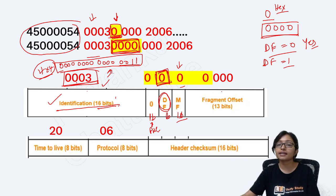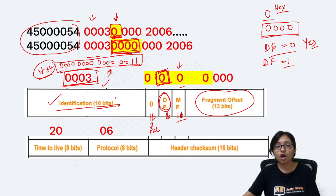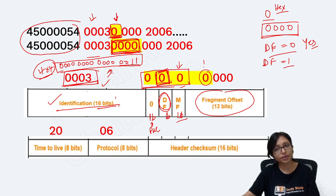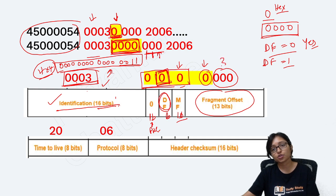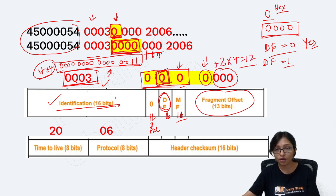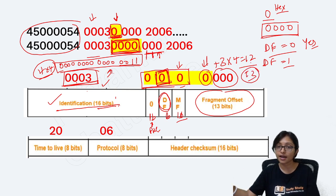After the 3 flag bits, we still need 13 bits for the Fragment Offset. From the 4-bit expansion of 0, we already used 3 bits for flags, so 1 bit remains. Then we take 3 more hexadecimal digits (each 4 bits) — 3 times 4 equals 12 — giving 12 plus 1 equals 13 bits total for the Fragment Offset.